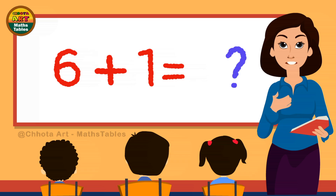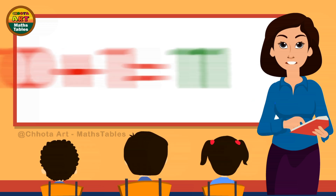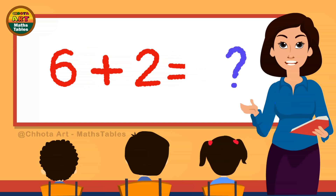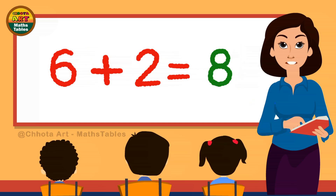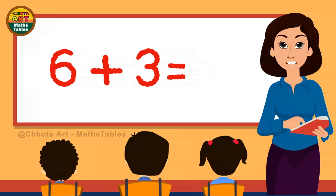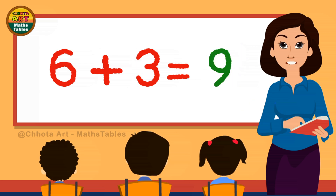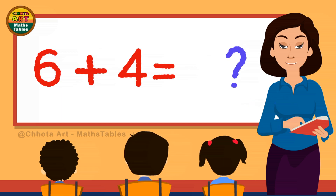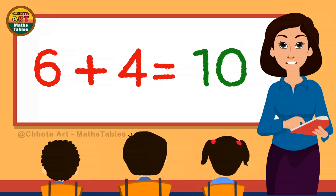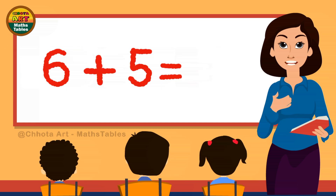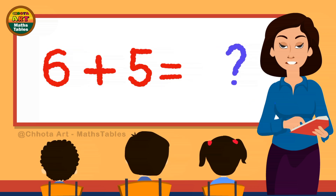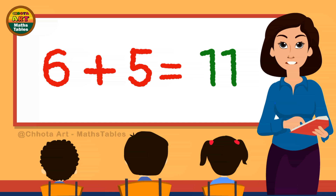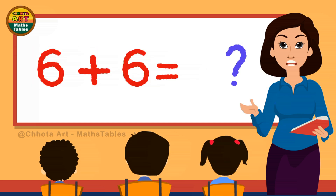6 plus 1 is... 6 plus 1 is 7. 6 plus 2 is... 6 plus 2 is 8. 6 plus 3 is... 6 plus 3 is 9. 6 plus 4 is... 6 plus 4 is 10. 6 plus 5 is... 6 plus 5 is 11.